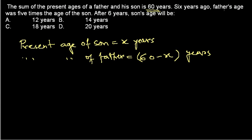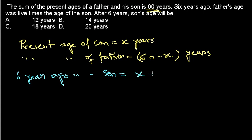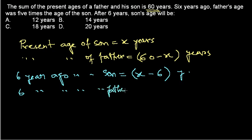Now, 6 years ago, father's age was 5 times the age of the son. So we need to find the ages of both of them 6 years ago. Six years ago, the age of the son — present age is x, so 6 years ago it will be x minus 6 years. And 6 years ago, the age of the father — present age is 60 minus x, so 6 years ago the father will be 6 years less.